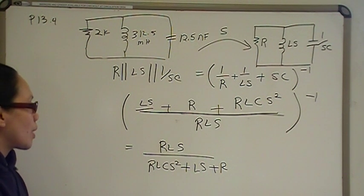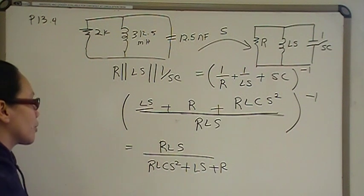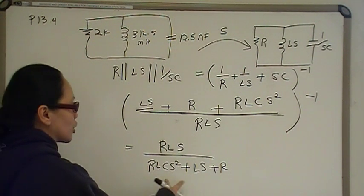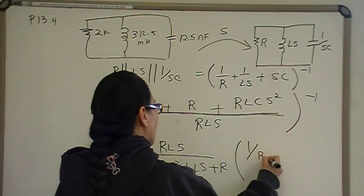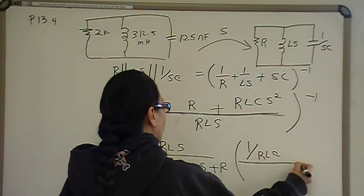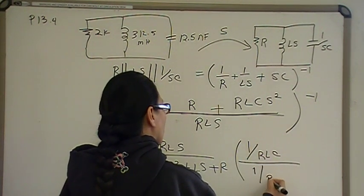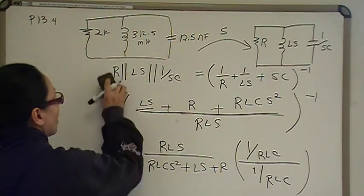And so, the way I'm going to teach it is that's the first thing you're going to do, is get a one coefficient. So, you're going to multiply top and bottom by 1 over RLC.